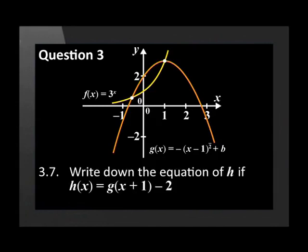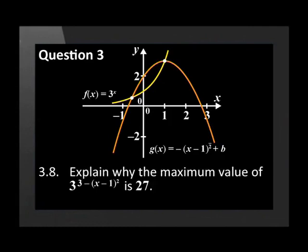Write down the equation of h if h(x) is equal to g(x plus 1) in brackets minus 2. Explain why the maximum value of 3 to the exponent 3 minus (x minus 1) squared is 27.